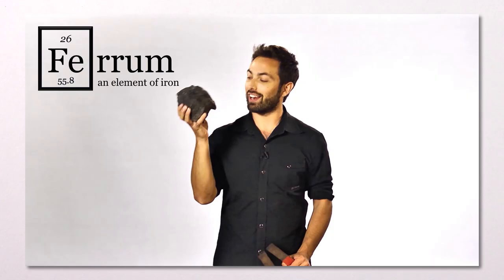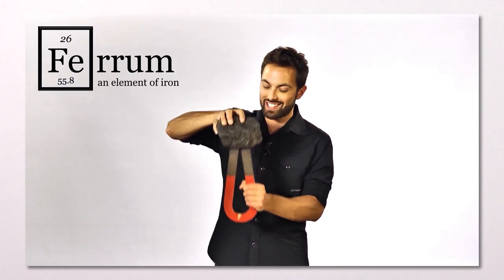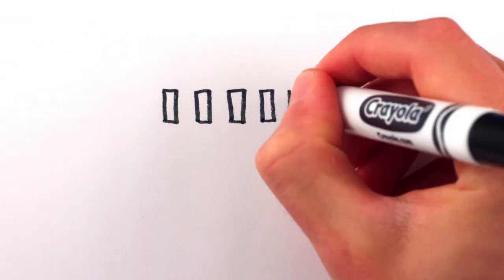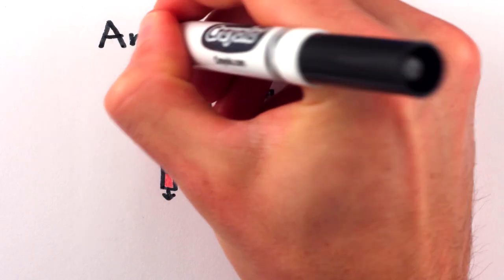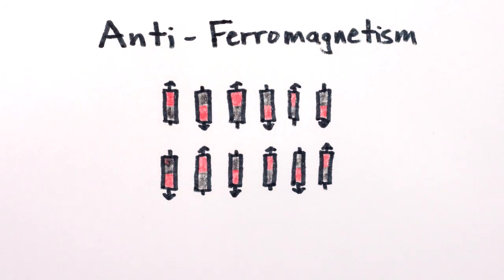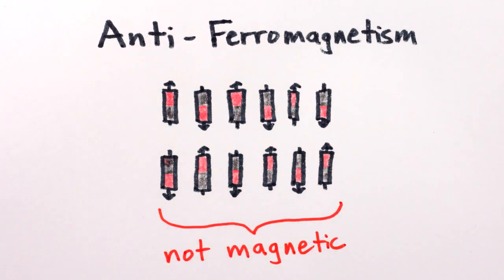This is ferromagnetism, named after iron, which is pretty darn magnetic. However, it's not always so easy. Sometimes the atoms actually want to align their magnetic fields in alternating directions. This is called anti-ferromagnetism, and it means the bulk material won't have a magnetic field at all.